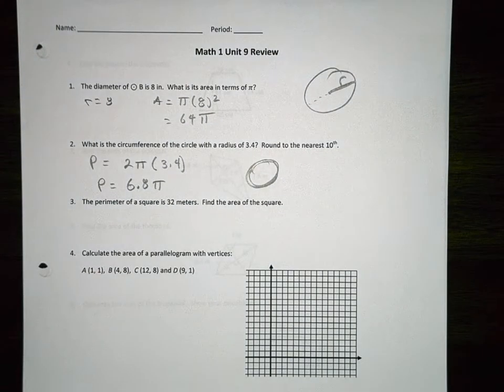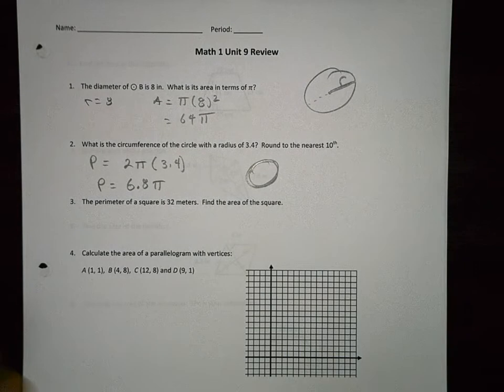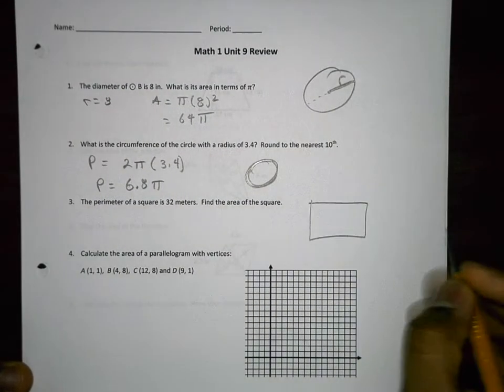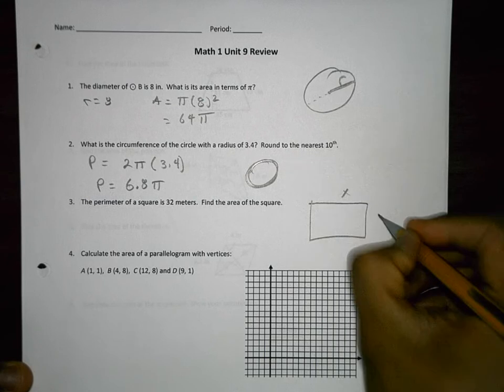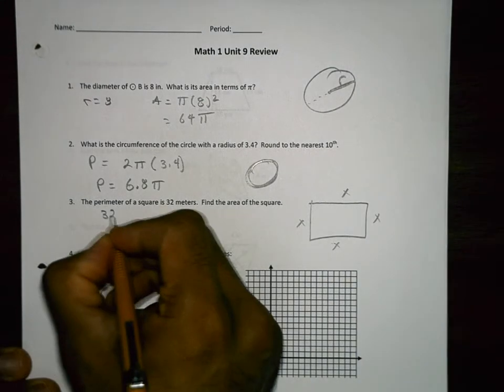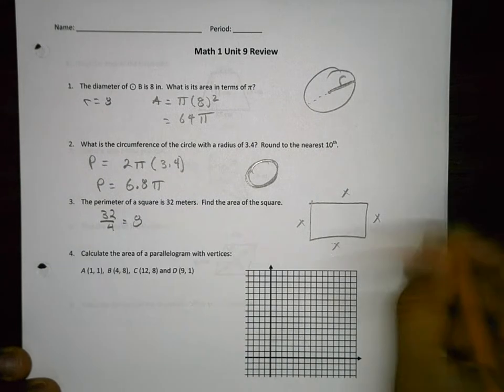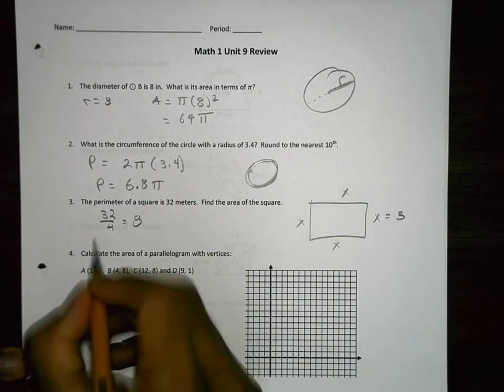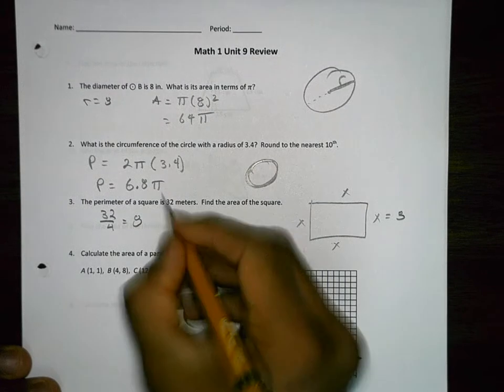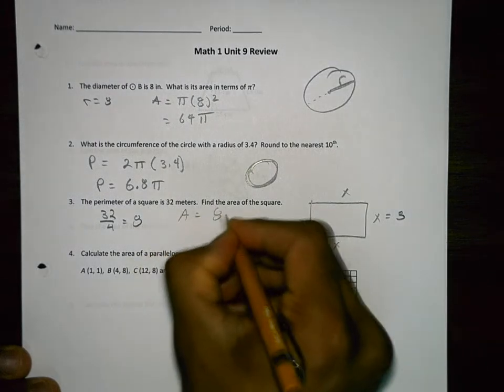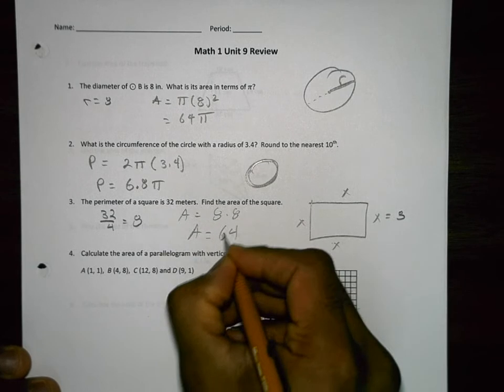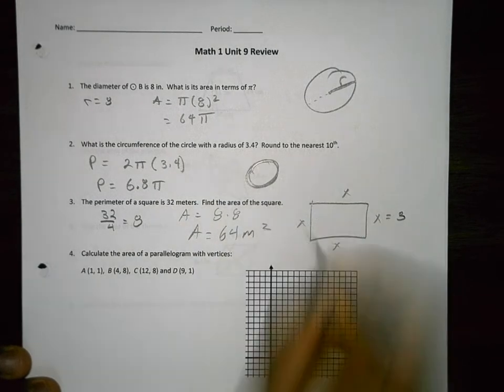The perimeter of a square is 32 meters. Find the area of the square. The perimeter is 32, that's if you add up all the sides. They're all the same. If I do 32 divided by 4, that equals 8. Each side has to be 8. The area is base times height, so the area is 64 meters squared.